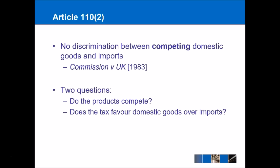Article 110 Part 2 is a lot more broad, and there are basically two questions to ask when answering a problem question: do the products compete against each other — would you think about buying a beer or buying a wine? They obviously do compete. And does the tax favour domestic goods over imports? That's the key point Article 110 is getting at.